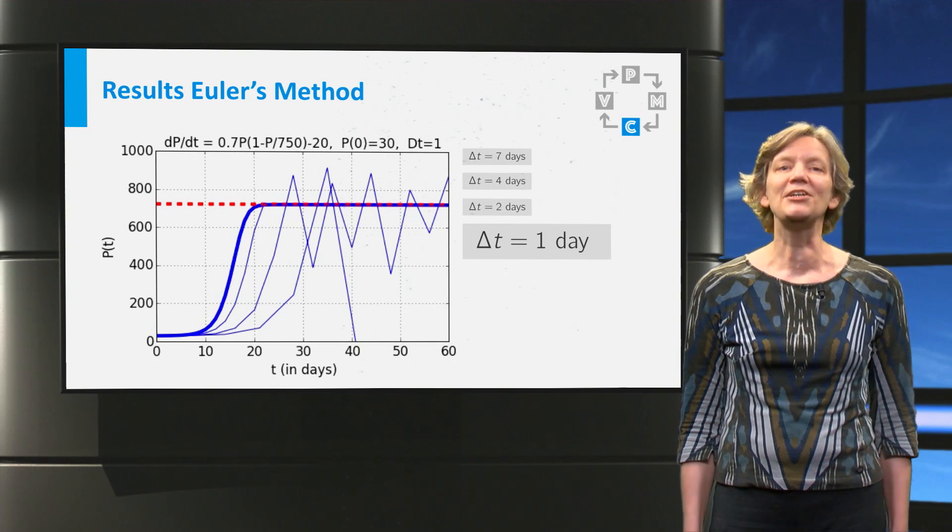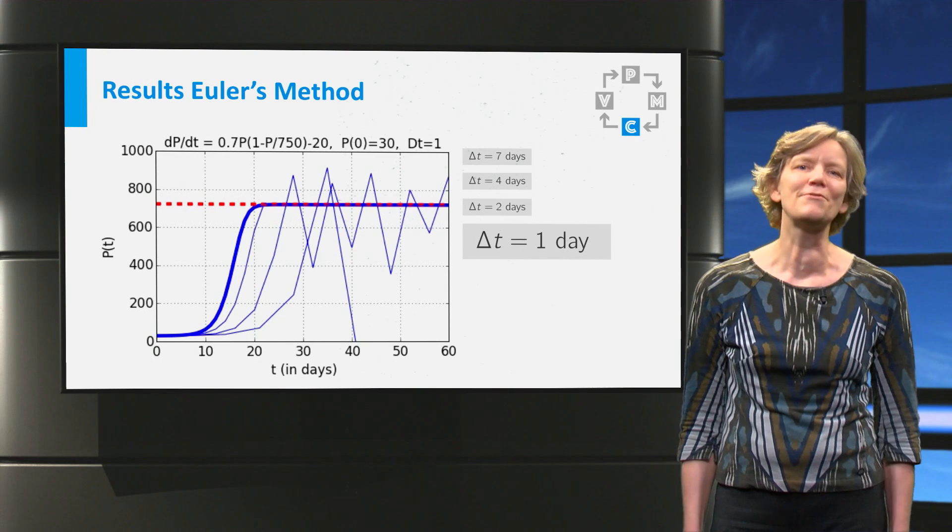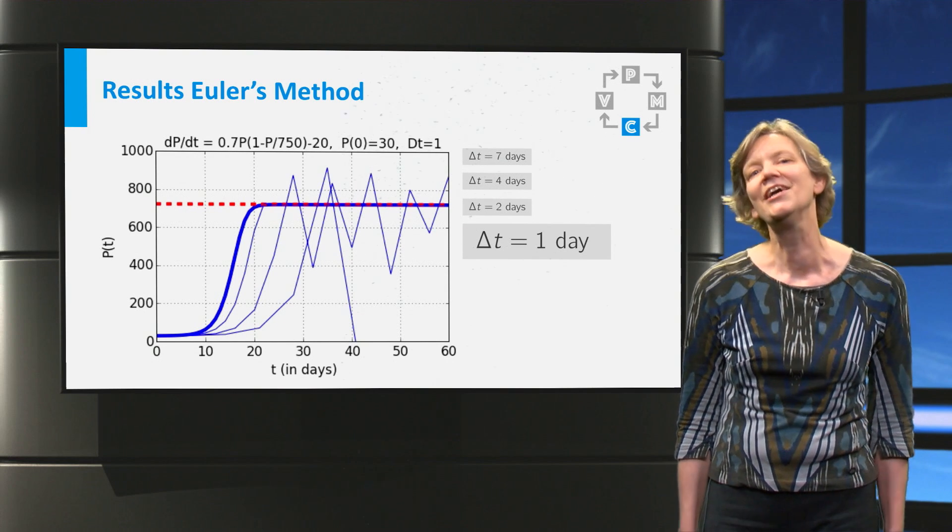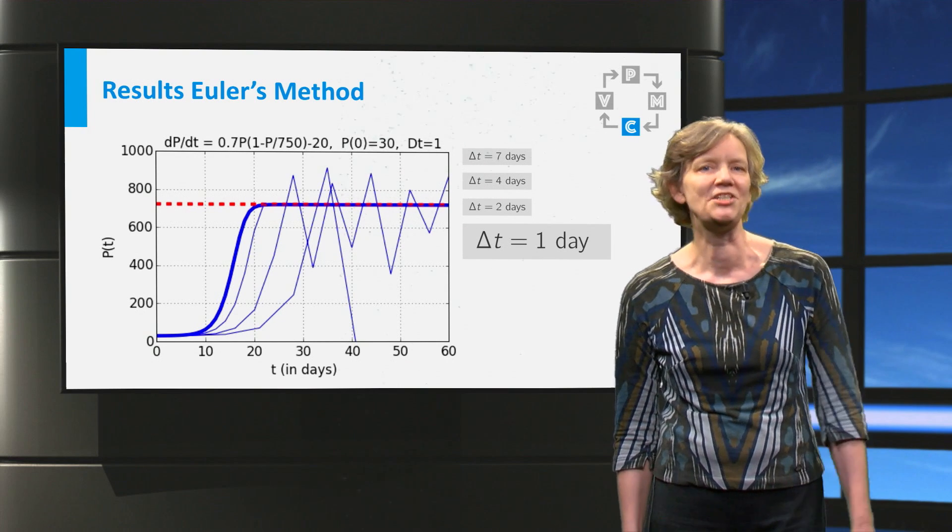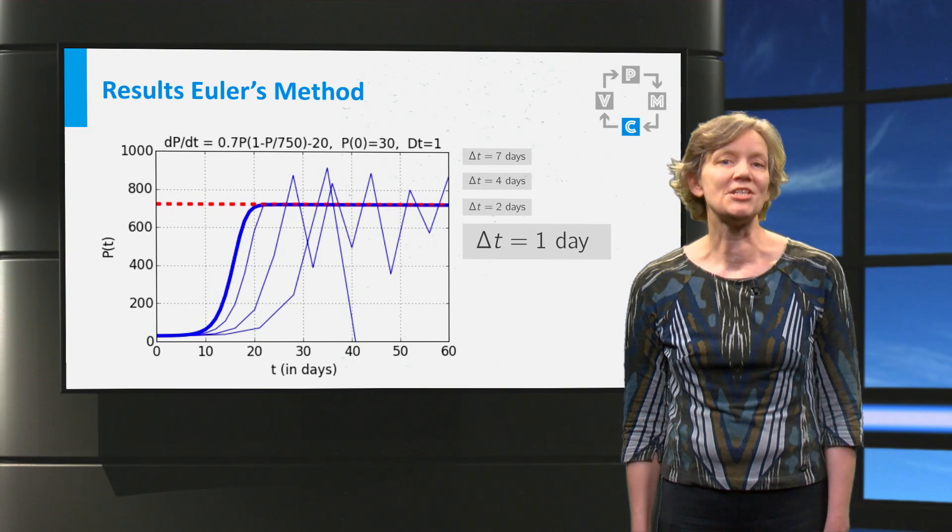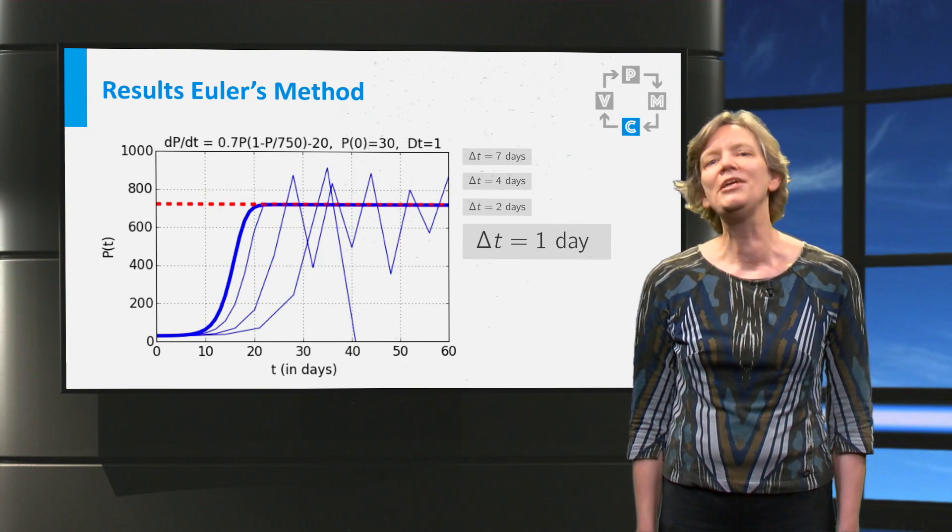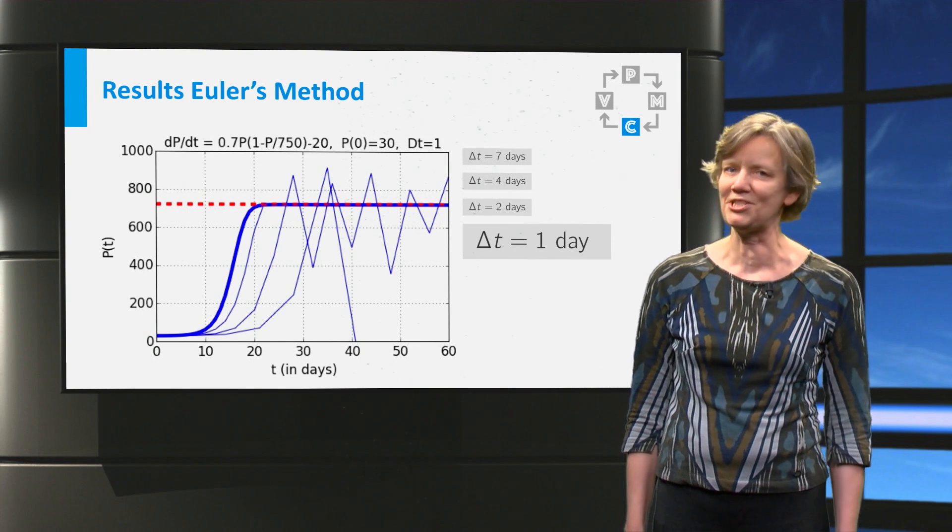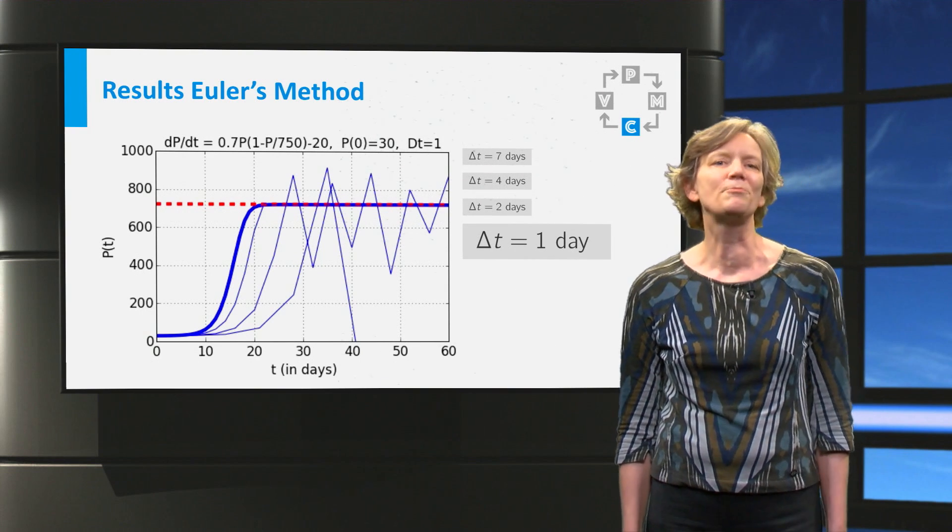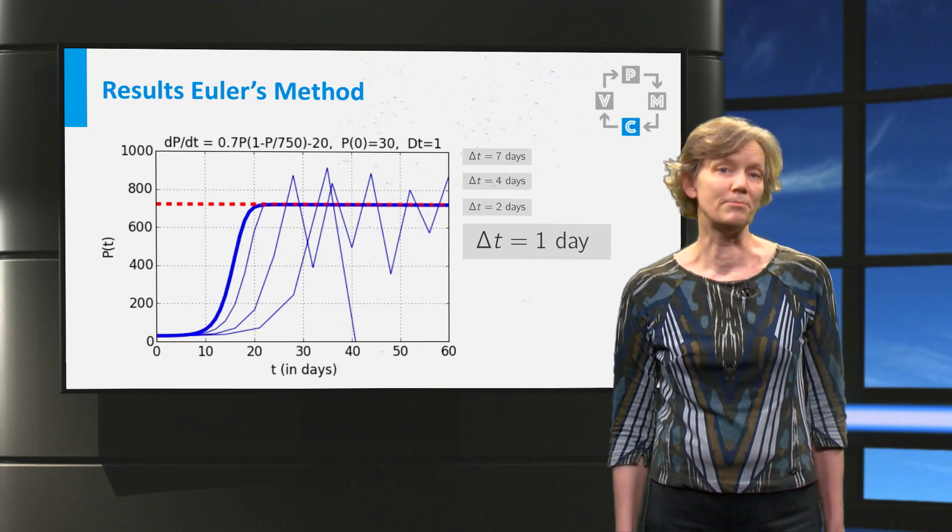Luckily, this rainbow fish calculation is so tiny that even for a very small step size, your computer will do the calculation in a wink. And the results can be stored in a few kilobytes. Only when you use a very, very, very small step size, you will run into problems because of the machine precision.